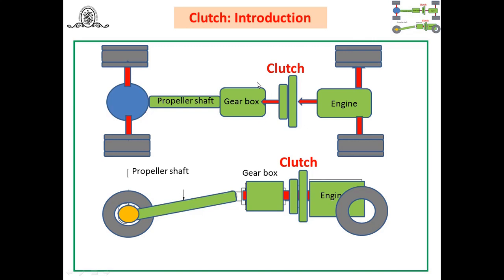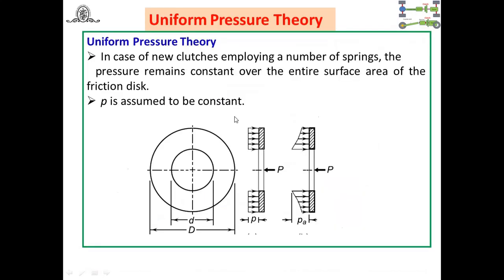The clutch is required to transmit a given power. Power transmitted by the clutch is the product of torque and speed. If the engine runs at greater speed, lower is the torque to be transmitted. Therefore, it is logical to place the clutch at the high speed side, connecting the engine and the gearbox. Placing it elsewhere would increase cost and require transmitting high torque. Clutch location between engine and gearbox is important.